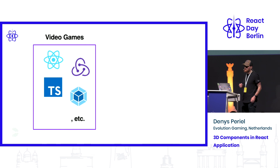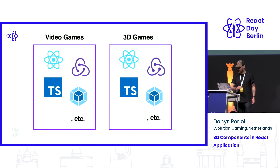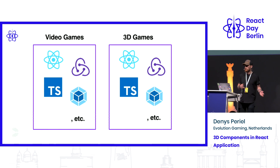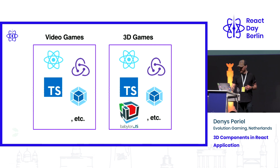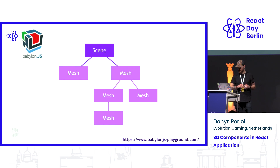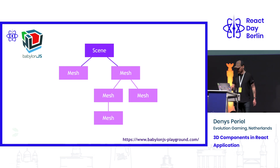In our video games, we use React, TypeScript, Redux, Webpack, etc. And in our 3D games, we decided to follow the same stack so we could reuse many components which are done in video games. For the 3D part, we use Babylon.js, which is a complete JavaScript framework to build video games and experiences with HTML5, WebGL, WebVR, etc.